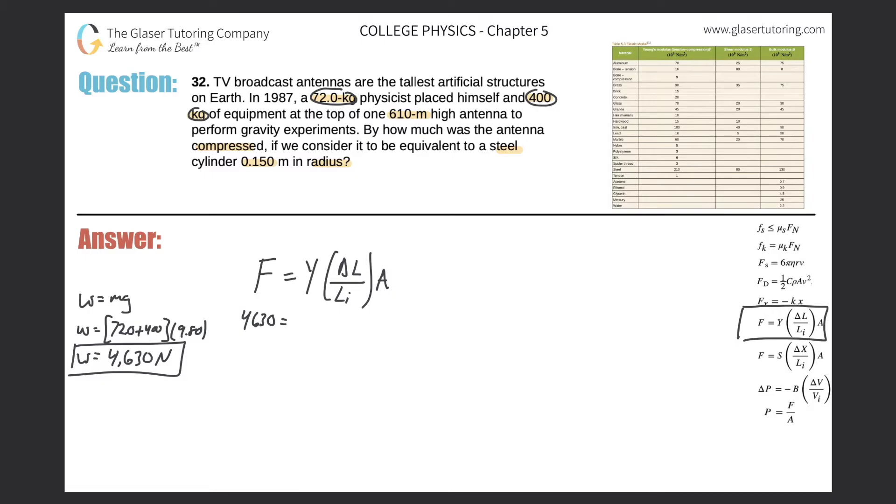So now we have to find the Young's modulus for compression. We're talking about a steel cylinder. So let's go to our table on the upper right-hand side and look for steel, and here it is. Here's steel, and here is the Young's modulus for it: 210. Remember, that's multiplied by 10 to the 9, because all these values are 10 to the 9.